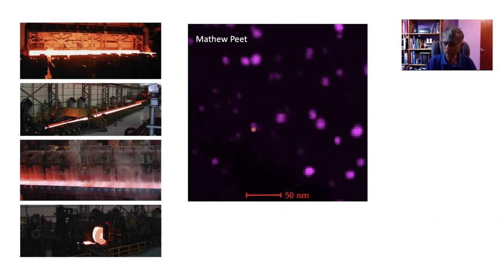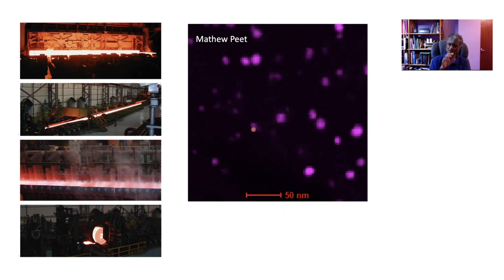Had we used niobium, it would precipitate at a much higher temperature and not be useful in both retarding recrystallization and therefore achieving the pancake grain structure. In the next slide, I'm going to show you two pole figures obtained using electron backscattered diffraction, each from a single austenite grain, looking at the orientations of the martensite plates. In one case the austenite grain is not deformed, and in the second case it's pancaked.